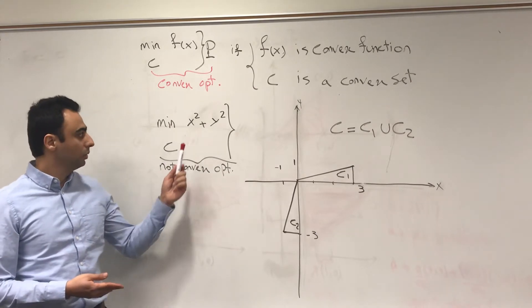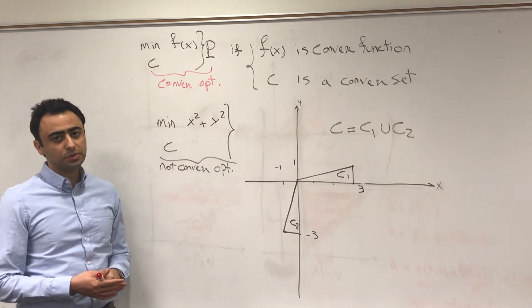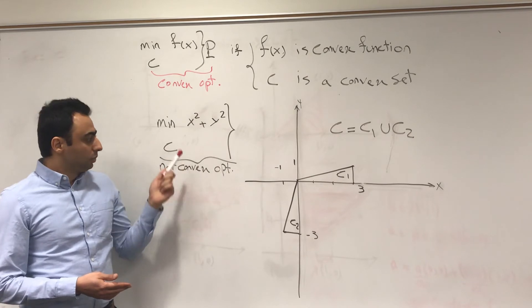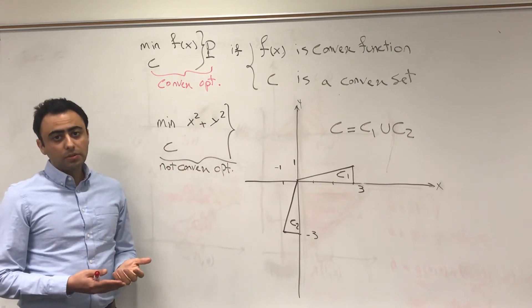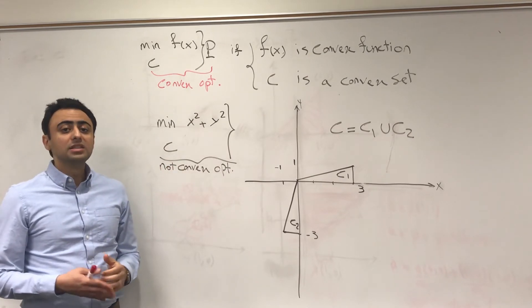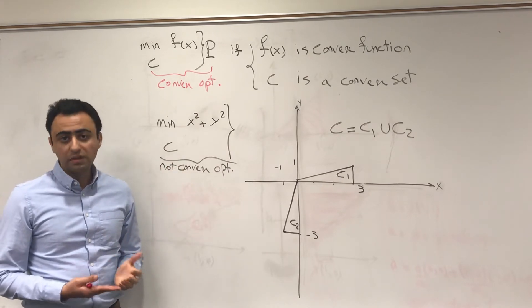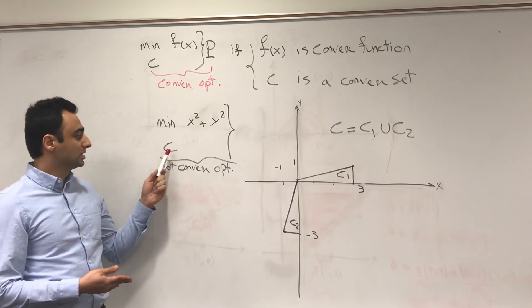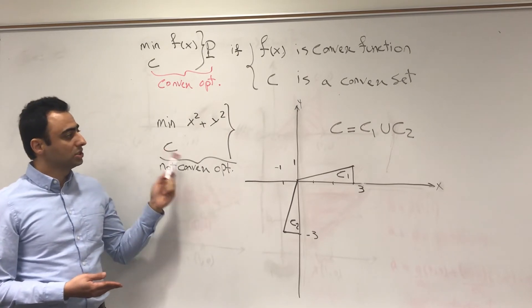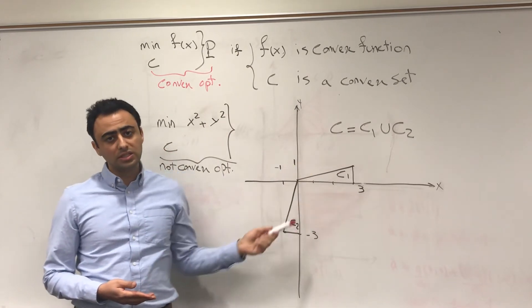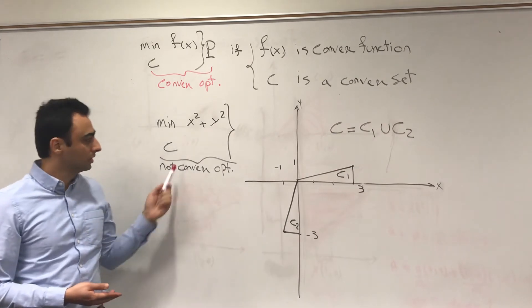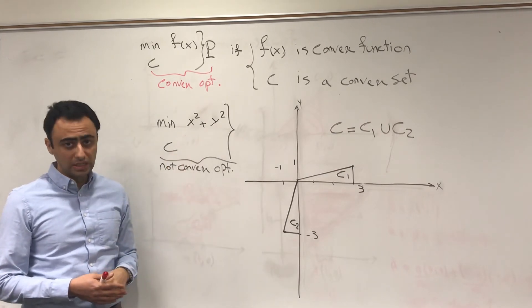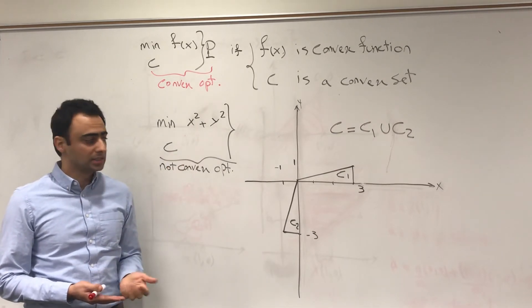Assume we have this minimization problem, which is not a convex optimization problem. Why? Because C, which is the union of C1 and C2, is not a convex set, even though the cost function is convex.